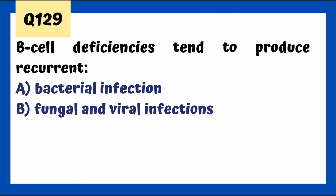An acute hemolytic transfusion reaction presents with fever, hypertension, tachypnea, and tachycardia. A child developing fever and headache after transfusion describes febrile non-hemolytic transfusion reaction. Delayed hemolytic transfusion reactions are generally self-limited. B-cell deficiencies tend to produce recurrent bacterial infections; T-cell deficiency tends to cause fungal and viral infections.